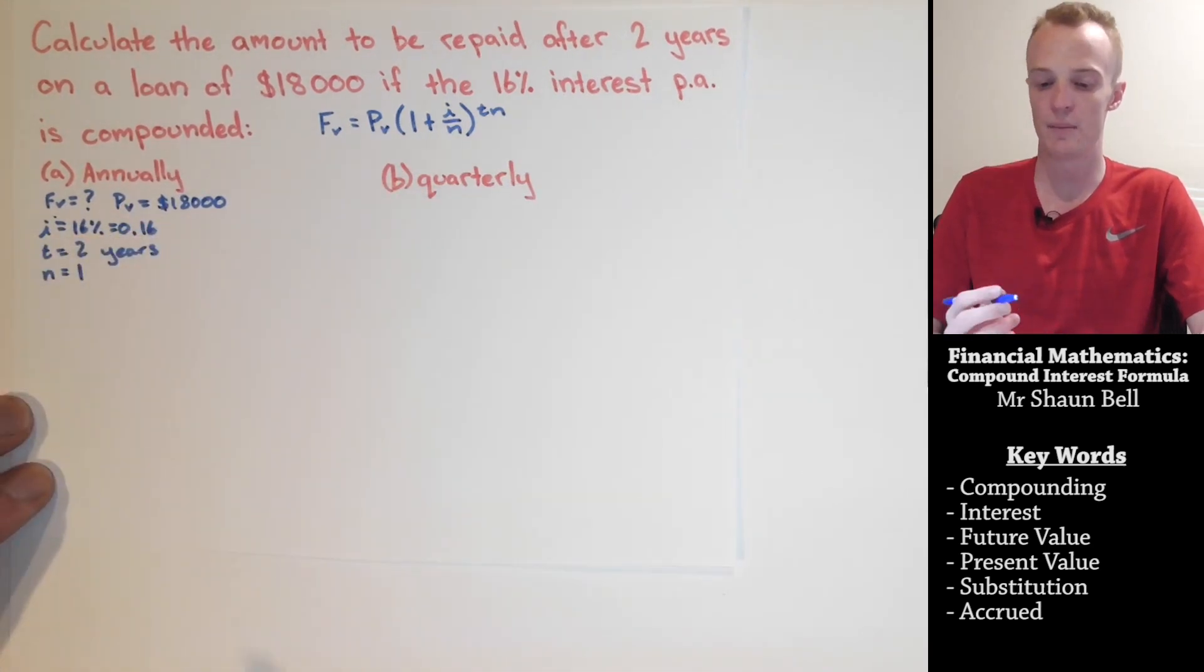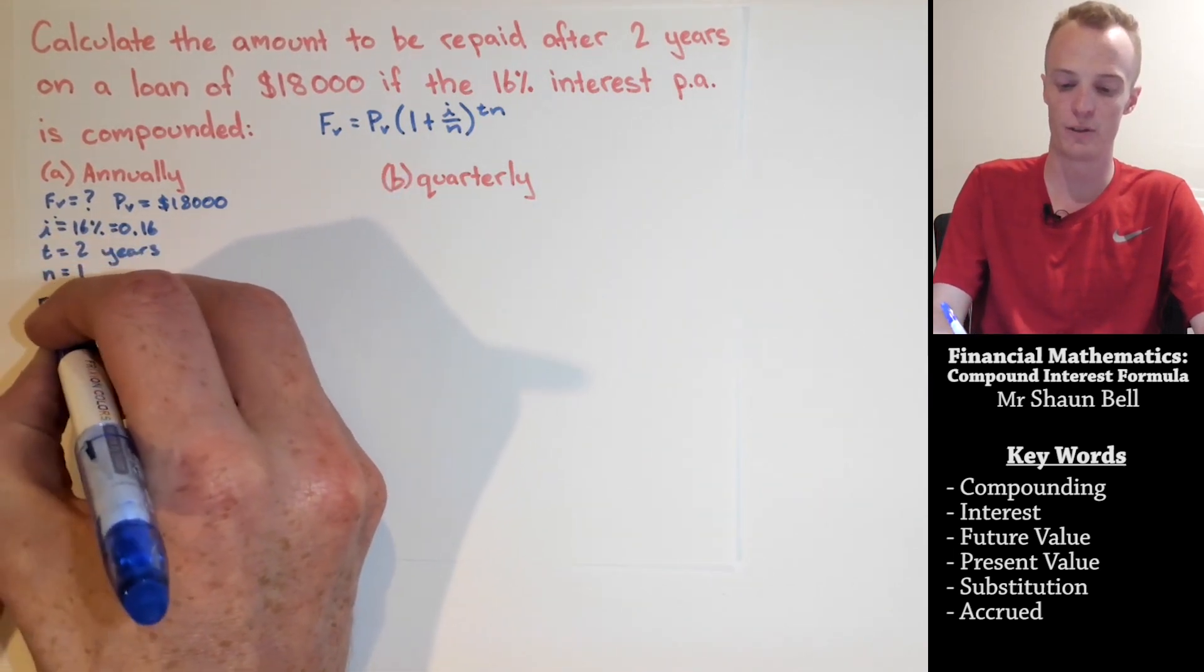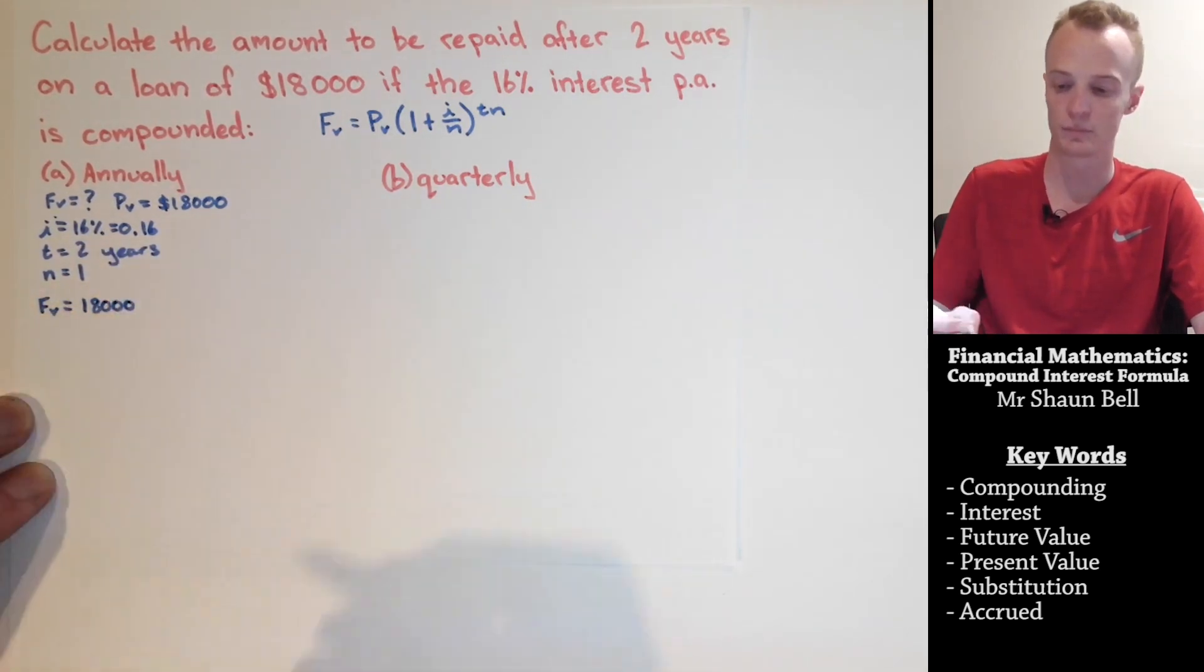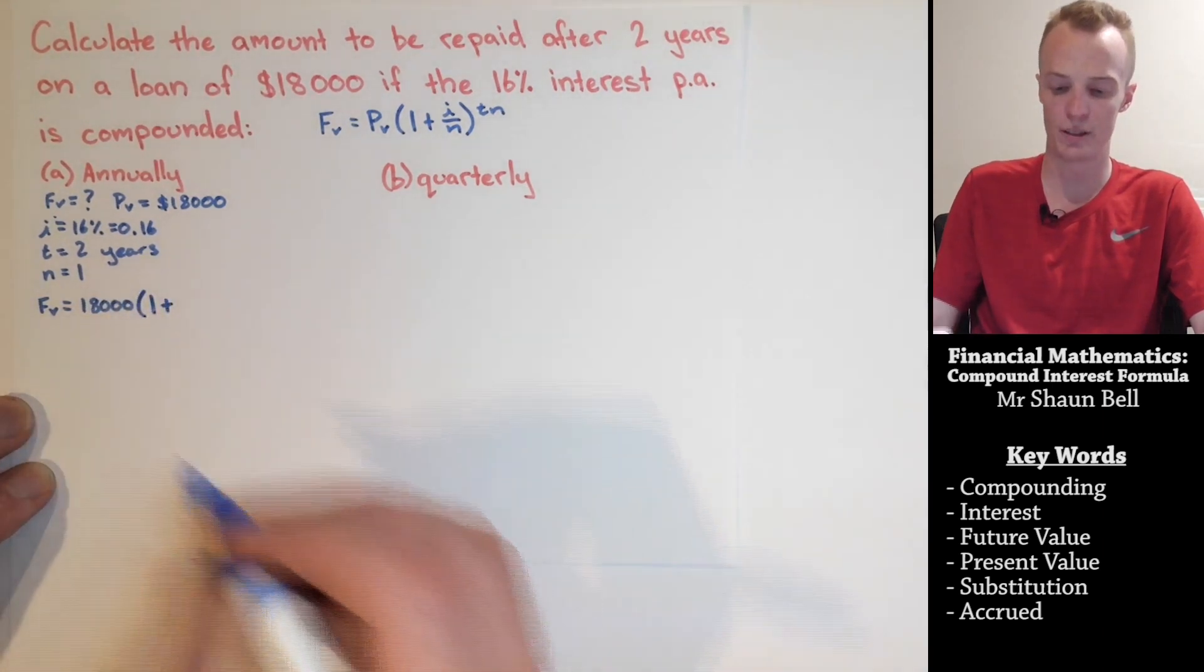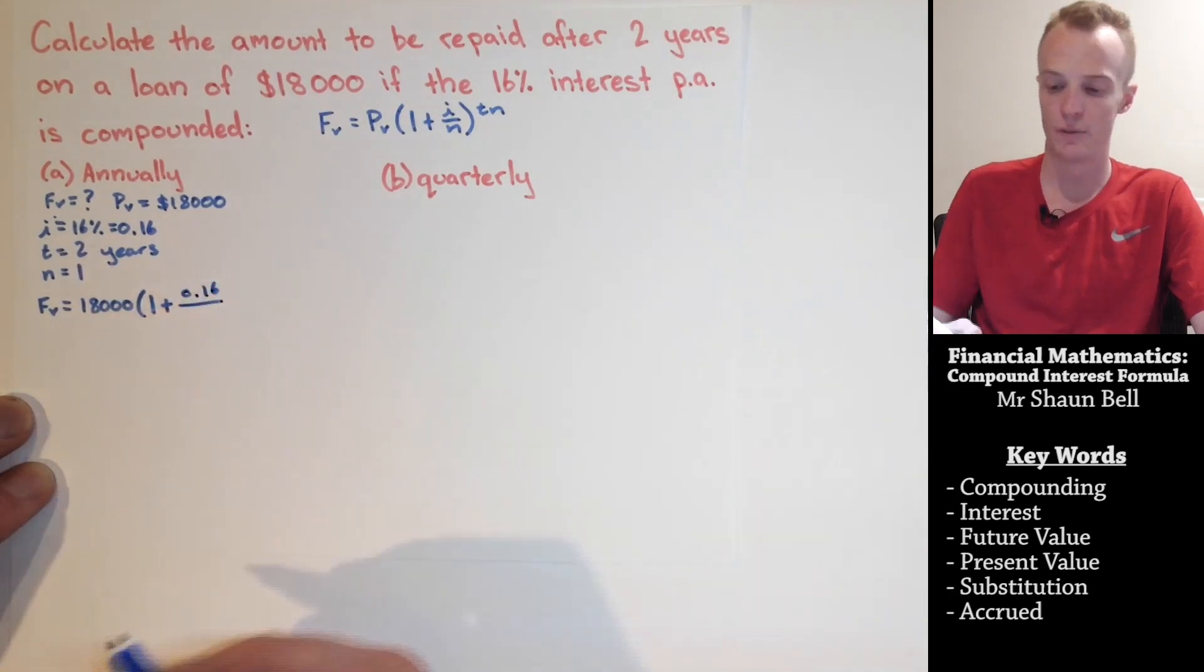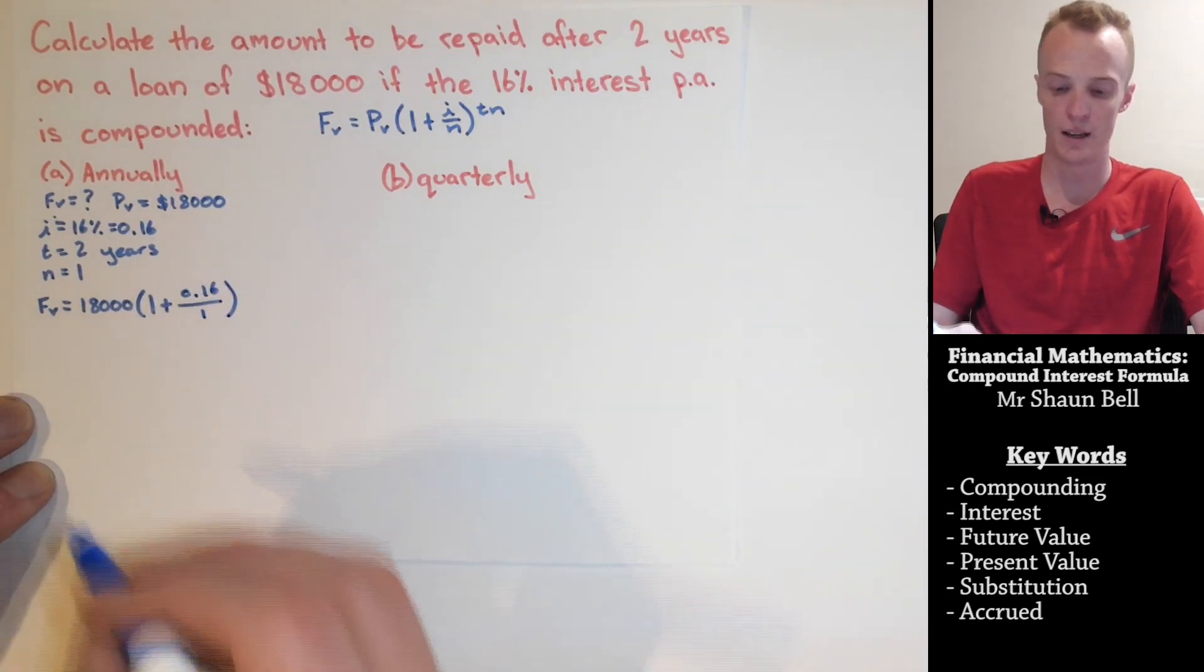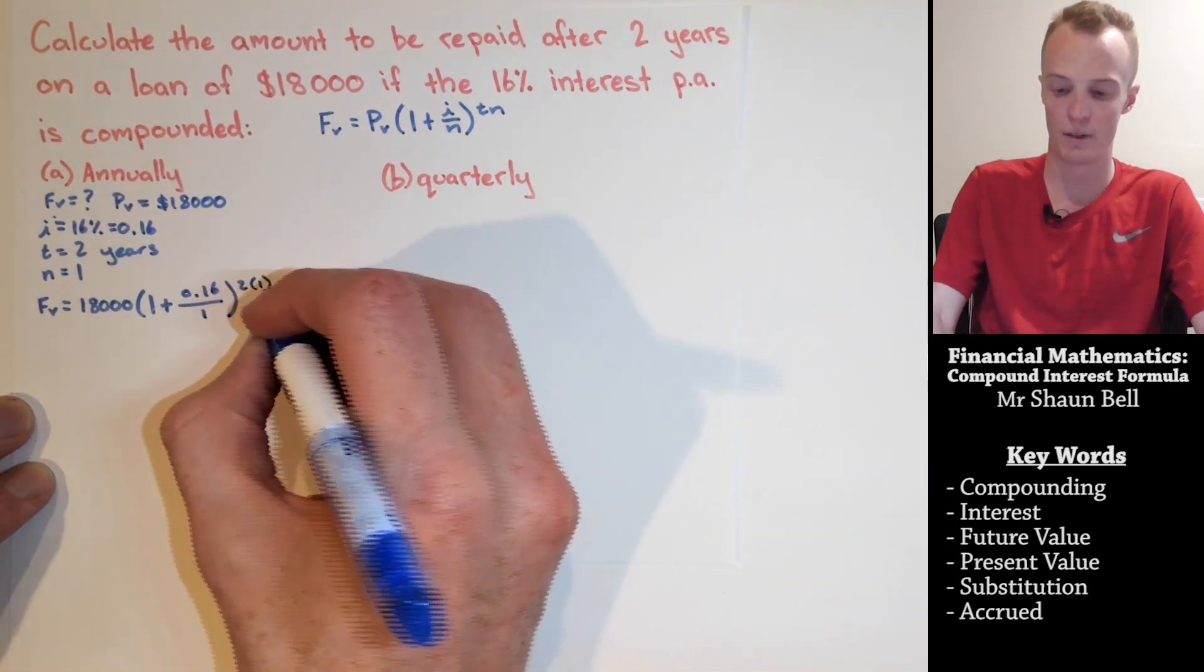From here, we substitute our information into the formula. So, we don't know what our future value is, so we leave that. Our present value is 18,000. That's going to be multiplied by 1 plus our interest, which is 0.16, divided by n, which is going to be 1, to the power of t, which is going to be 2, times n, which is going to be 1.